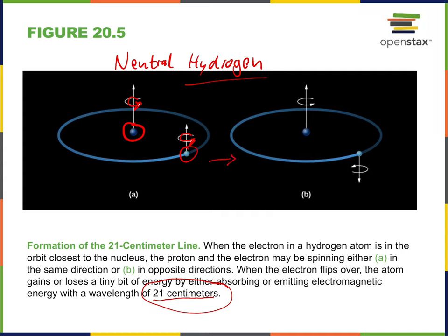When two neutral hydrogen atoms bump into each other — which is rare because the density is incredibly low — energy is imparted that can allow the electron to flip and spin in the opposite direction of the proton. The atom is now in a very subtly excited state. Gradually, that tiny amount of energy will be released. It can take millions of years statistically, but eventually the atom returns to an unexcited state and releases a little bit of energy corresponding to light at the 21 centimeter radio level.